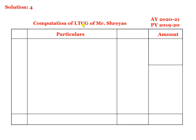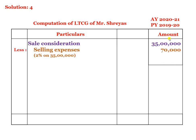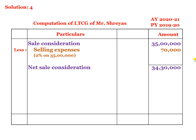Computation of long-term capital gain of Mr. Shriya for assessment year 2021-22, previous year 2019-20. Sale consideration is 35 lakhs. Selling expenses are 2% on sales — 2% of 35 lakhs equals 70,000. So net sale consideration is 34 lakhs 30 thousand, after deducting selling expenses.